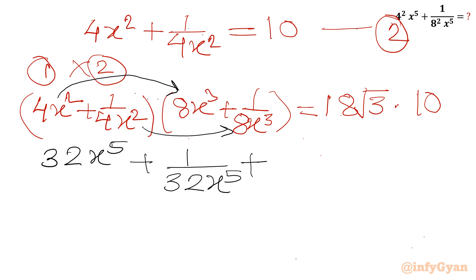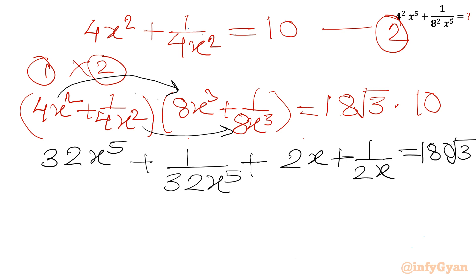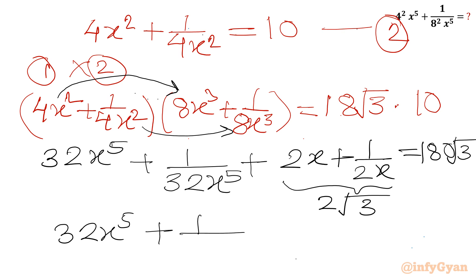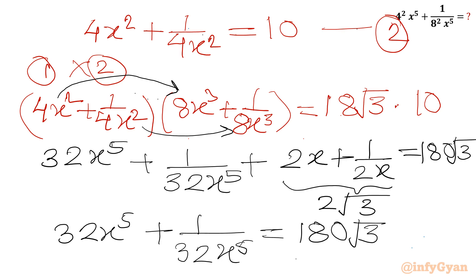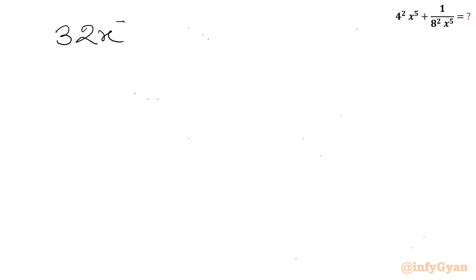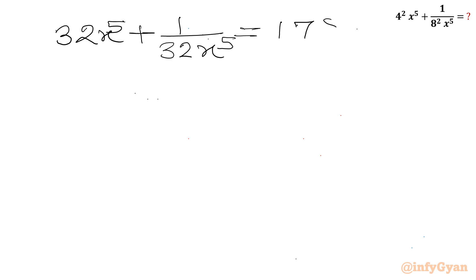The cross products are: 4x² times 1 over 8x³ gives 1 over 2x, and 1/4x² times 8x³ gives 2x. So the LHS expands to 32x⁵ + 1 over 32x⁵ + 2x + 1 over 2x. Since 2x + 1 over 2x equals 2√3, the equation becomes 32x⁵ + 1 over 32x⁵ + 2√3 equal to 180√3. Therefore 32x⁵ + 1 over 32x⁵ equal to 180√3 minus 2√3 = 178√3.